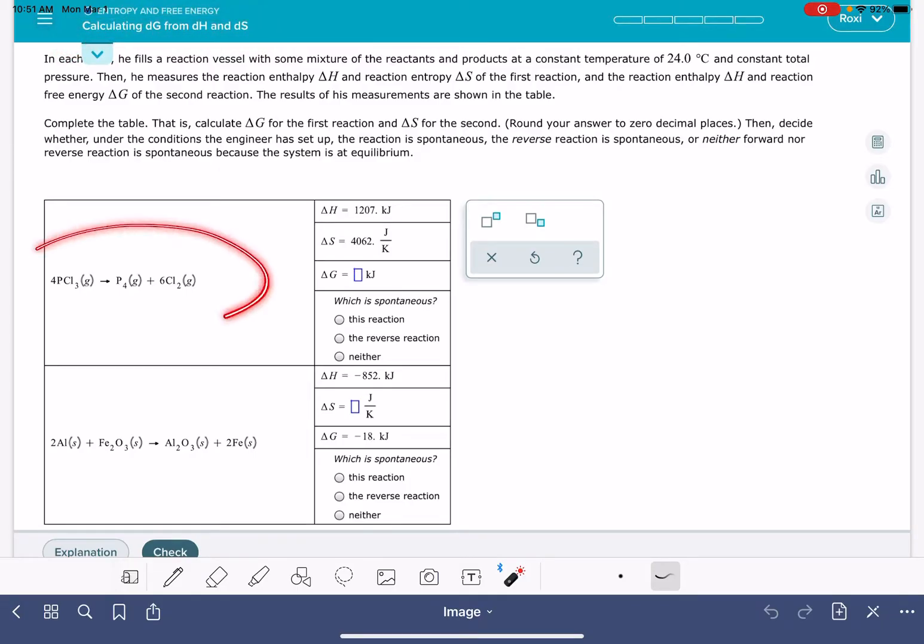So in this problem, you are going to be given two chemical reactions and some data. You're going to be asked to calculate either delta H, delta S, or delta G, and then make a prediction about whether or not the reaction is spontaneous. You do need to know the temperature for these problems, and the temperature is embedded up in the story here in the problem. So this one, the temperature is 24 degrees Celsius.